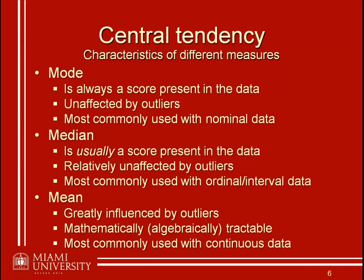It doesn't really make sense to calculate a mean and report something that falls between, say, somewhat likely and likely. It's much better to commit to one of those values. The same applies with a ranking system — it makes more sense to say we were ranked 35th on average than to say we were rated 33.145. Decimals don't make sense for ordinal or ranking scales. For continuous data, fine-grained measurements and decimals do make sense, so it's perfectly appropriate to use the mean or mathematical average there.